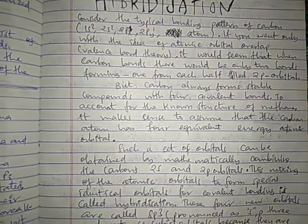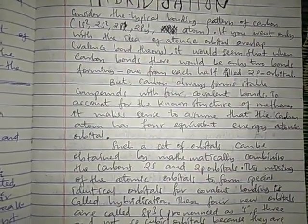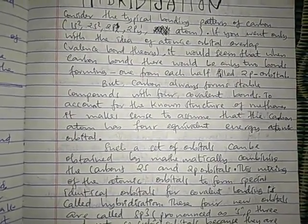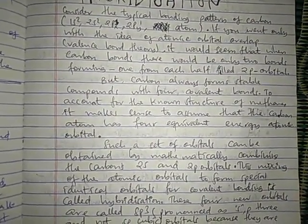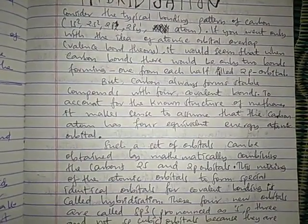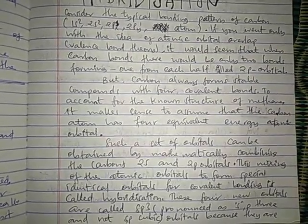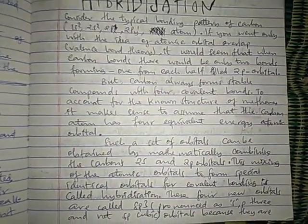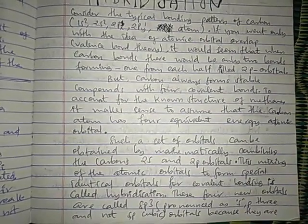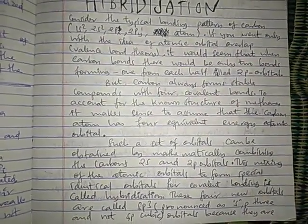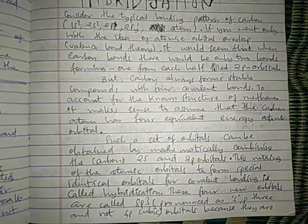If you don't remember your O-level organic chemistry, you will encounter it again in your advanced level organic chemistry. So what accounts for the fact that carbon has the ability to form four bonds instead of two bonds? To account for the known structure of methane, CH4, where carbon forms four bonds with hydrogen, it makes sense to assume that the carbon atom has four equivalent energy atomic orbitals. Now, where do these additional half-filled orbitals come from?